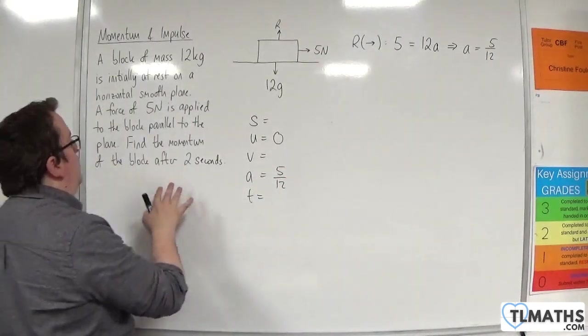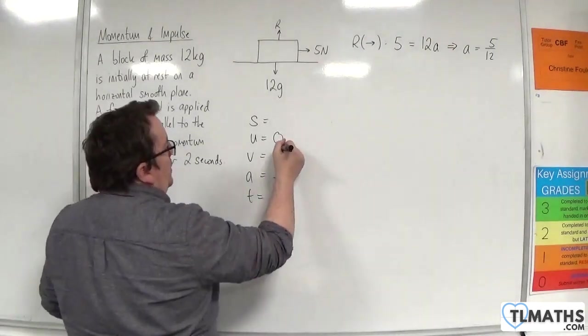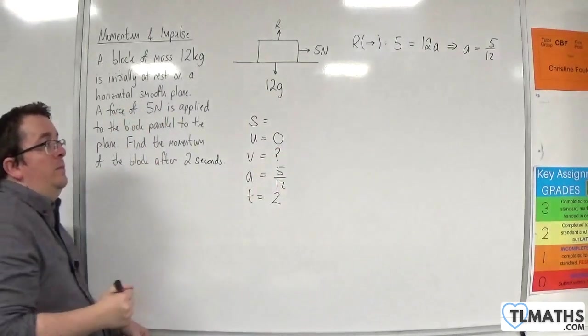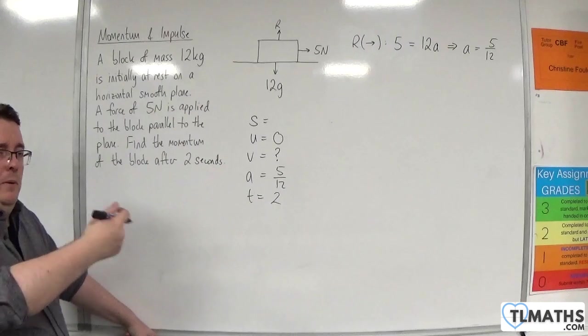We want to know the momentum after 2 seconds, so I'm going to put t as 2. And in order to calculate the momentum, I'm going to need the velocity, because it's mass times velocity.